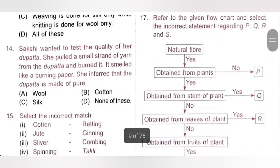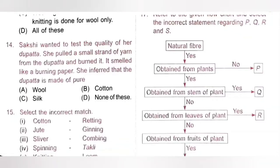Fourteenth question: Shokshi burned a strand from her dupatta and it smelled like burning paper. Cotton is a natural plant fiber that burns with a bright yellow flame and smells like burning paper — similar to paper since both are plant products. Option B, Cotton, is the correct answer.